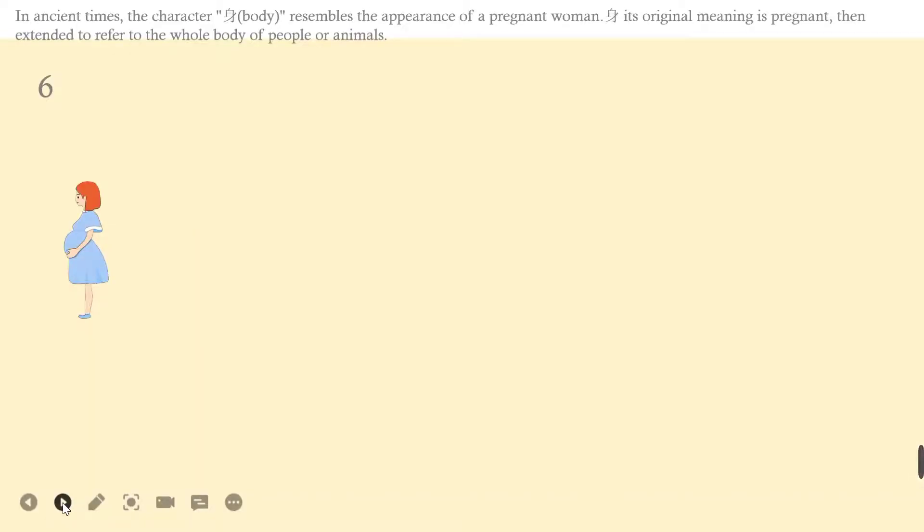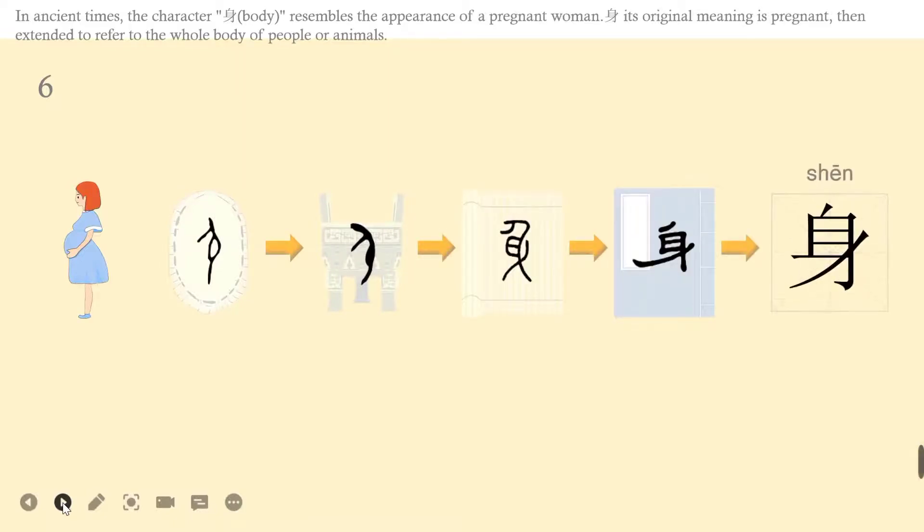Let's learn the sixth character, shēn. You can see a pregnant woman on the slide. In ancient times, the character shēn resembles the appearance of a pregnant woman. Its original meaning is pregnant. Then extended to refer to the whole body of people or animals.